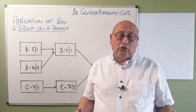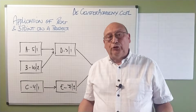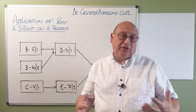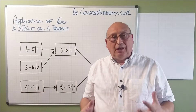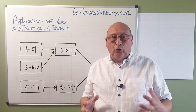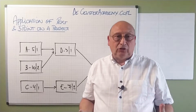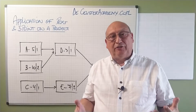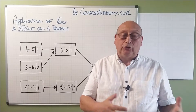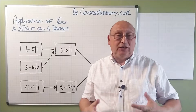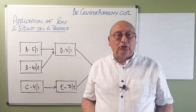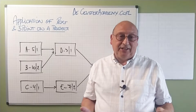Understanding how to calculate the expected duration of an activity and its standard deviation is very interesting. We like to apply this on a project. We have to look at the calculation of every activity. And once we have calculated using PERT or 3-point estimation — it doesn't matter — we find for every activity an expected duration and a standard deviation.